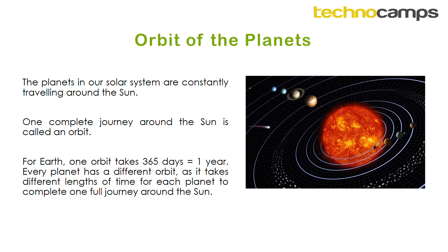These planets travel around the Sun and we call this an orbit. One complete journey around the Sun is called an orbit. For Earth, one orbit takes 365 days, which as we know is a year — so one year is the length of time it takes for our Earth to travel fully around the Sun once. But every planet, being a different distance from the Sun, has a different orbit length and takes a different amount of time to travel once fully around the Sun.